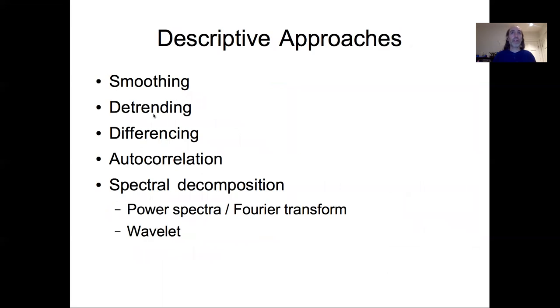So that kind of wraps up our discussion of descriptive approaches. I'm not going to go into spectral methods in this course. So building on these ideas of smoothing, detrending, differencing, and autocorrelation, we're going to next dive into how we move into actual writing down actual process models and data models and likelihoods that include autocorrelated errors.